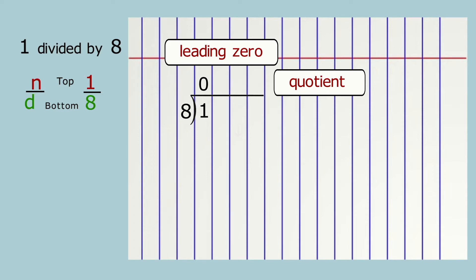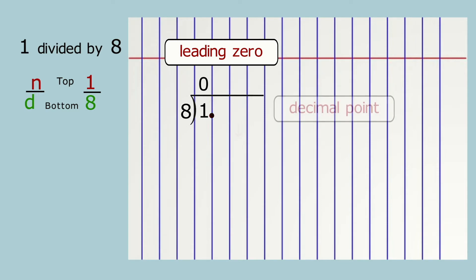The number one is a whole number — remember, it has an invisible decimal point to the right. Write the decimal point directly on that line, then move the decimal point up to the same place in the quotient, directly on that line.